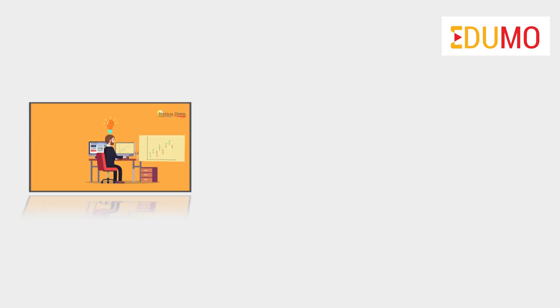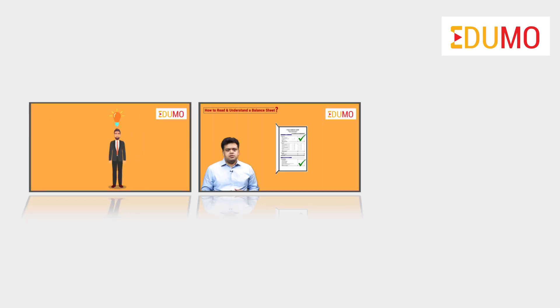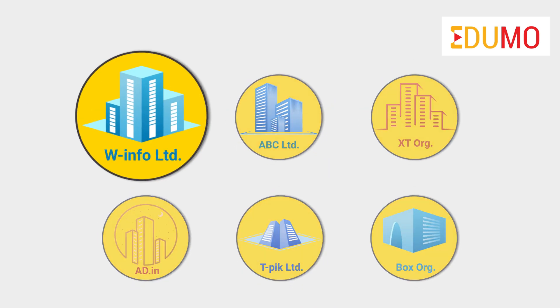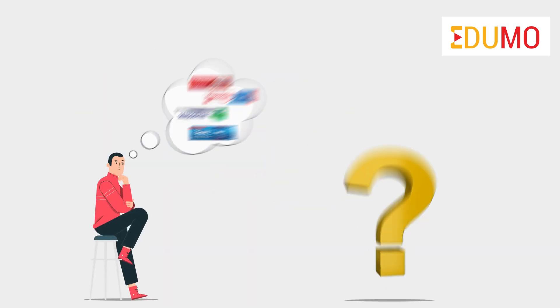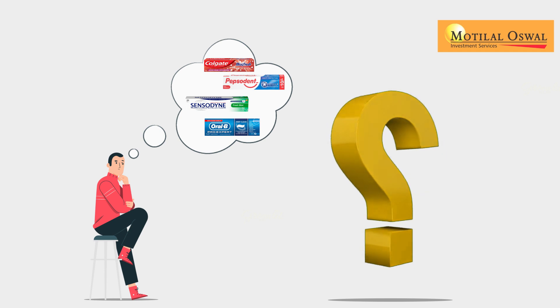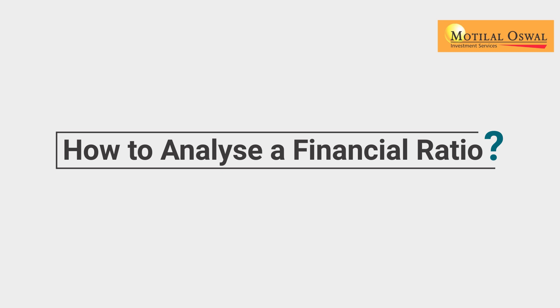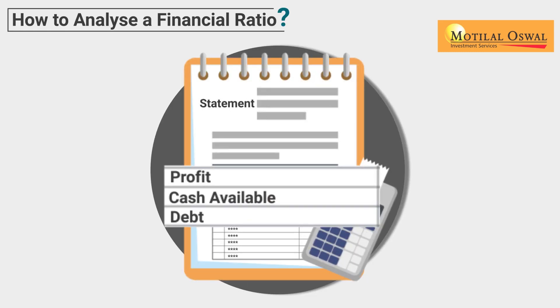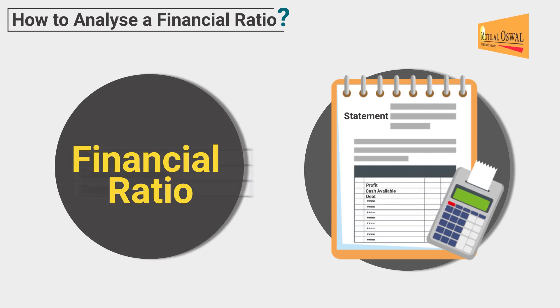We have already learnt how to analyze financial statements, balance sheets and cash flow statements. But how can we know if a company is better than its peers or not? Is it really possible to know if a company is better or worse than its peers? The answer is yes. For that, we need to conduct financial ratio analysis, which is arrived at by inferring data from the financial statements, giving us a meaningful conclusion about the company.